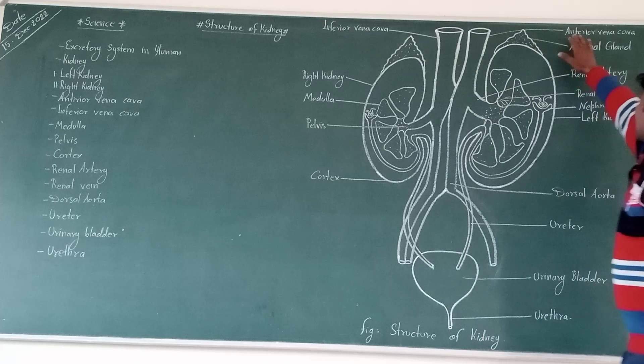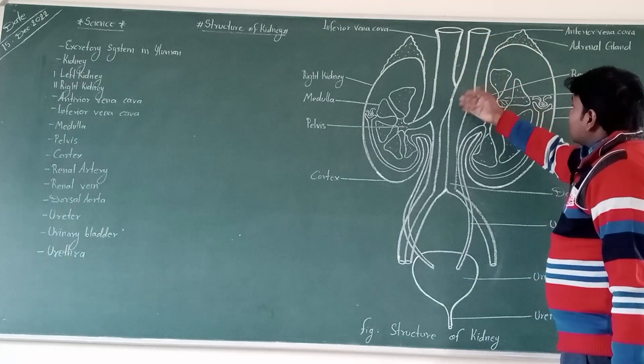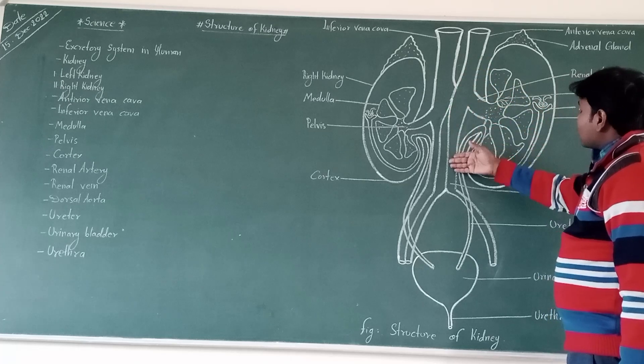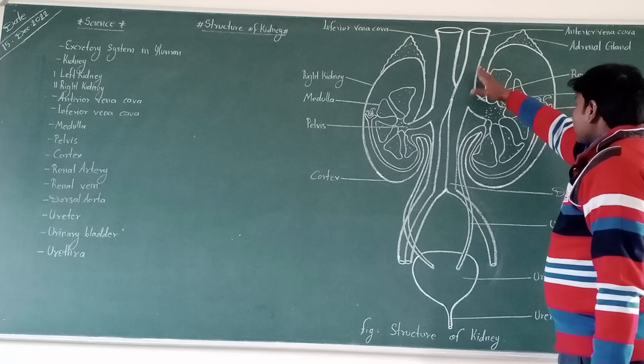And next, anterior vena cava. Anterior vena cava are the regions, are the canal-like structure, and they differ out due to flow of the oxygenated blood.